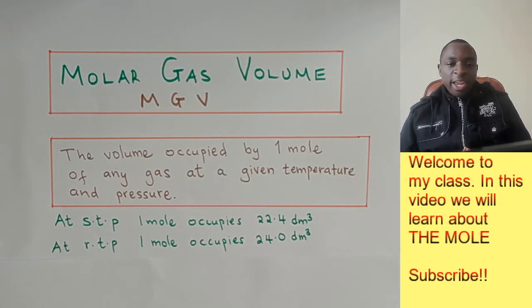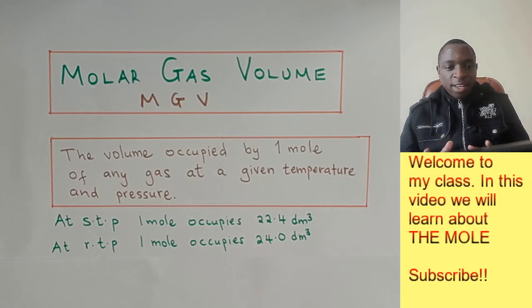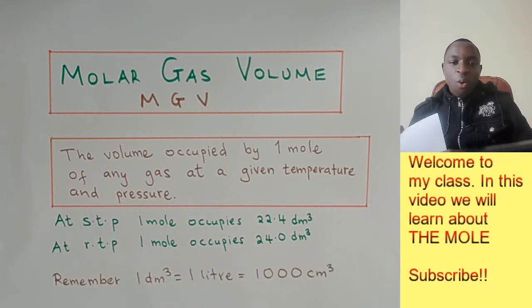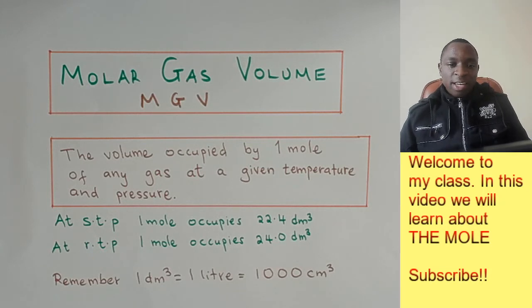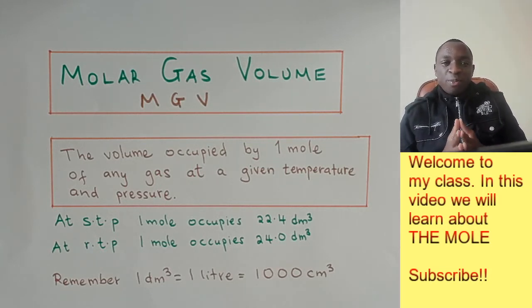So in order to remember all these values, you just need to remember one statement that one decimeter cubed is equal to one liter and is also equal to 1,000 cubic centimeters.